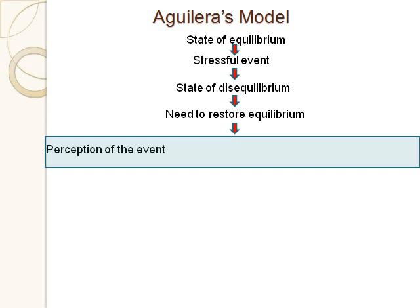Another aspect of perception of events is stability — is the negative event dynamic or stable? If something bad happened and you think it will always be this way, that's probably a distorted perception. Do you view problems as permanent, or do you have a more realistic dynamic view — acknowledging that this bad thing happened but it won't always be this way and things may get better?